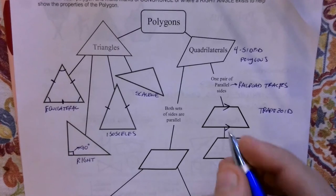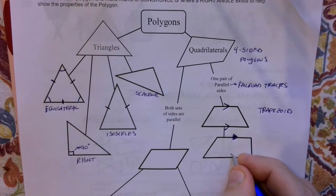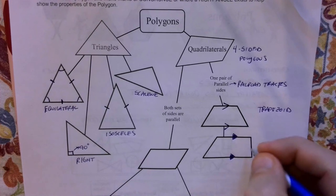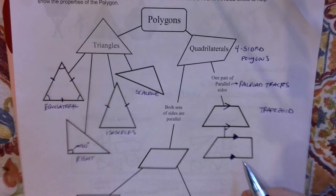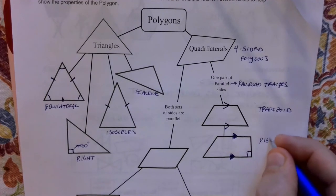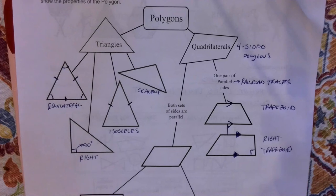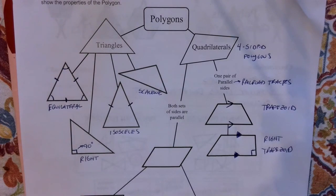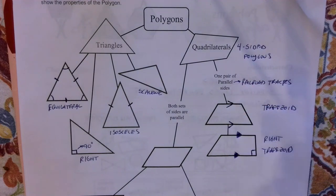This is a special type of trapezoid — a right trapezoid — because it has a right angle. So there's an example of a trapezoid; it kind of sits out by itself as a special type of quadrilateral. Its definition is simply one pair of parallel sides, shown with either parallel symbol.